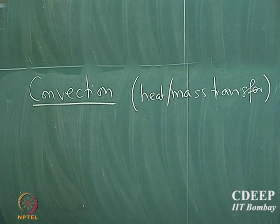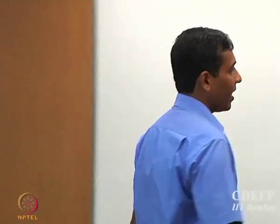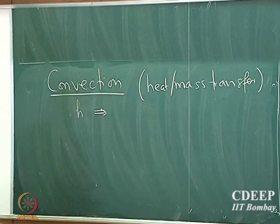We looked at only conduction and radiation and briefly alluded to convection in terms of Newton's law of cooling. We said if there are things flowing past an object and heat transfer rate is defined by Newton's law of cooling, then what should be the resistance. Now we are going to see how to estimate or characterize heat transport due to convection and how to estimate the heat transport coefficient.